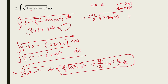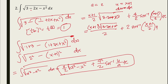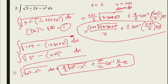...plus a squared over 2 times inverse sine of u/a: that is 4/2 times inverse sine of (x plus 1)/2 plus C. Simplifying, the final answer is: (x plus 1)/2 times the square root of 3 minus 2x minus x squared, plus 2 times inverse sine of (x plus 1)/2, plus C.